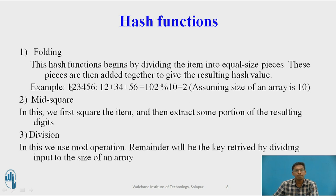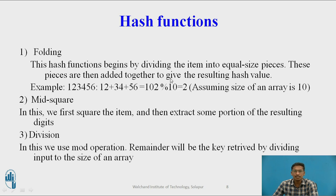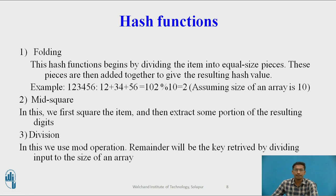For example, suppose the input value is 123456. Using folding, the input value is divided into three equal parts: 12, 34, and 56. Then addition is performed on all these small pieces — 12 + 34 + 56 = 102 — then 102 mod 10, where 10 is the size of the array, generating a hash value of 2. So this input value should be stored at index 2. In folding, you divide the input value into equal-size pieces. The size of each piece should be less than the size of the array so it does not produce an out-of-bounds index.